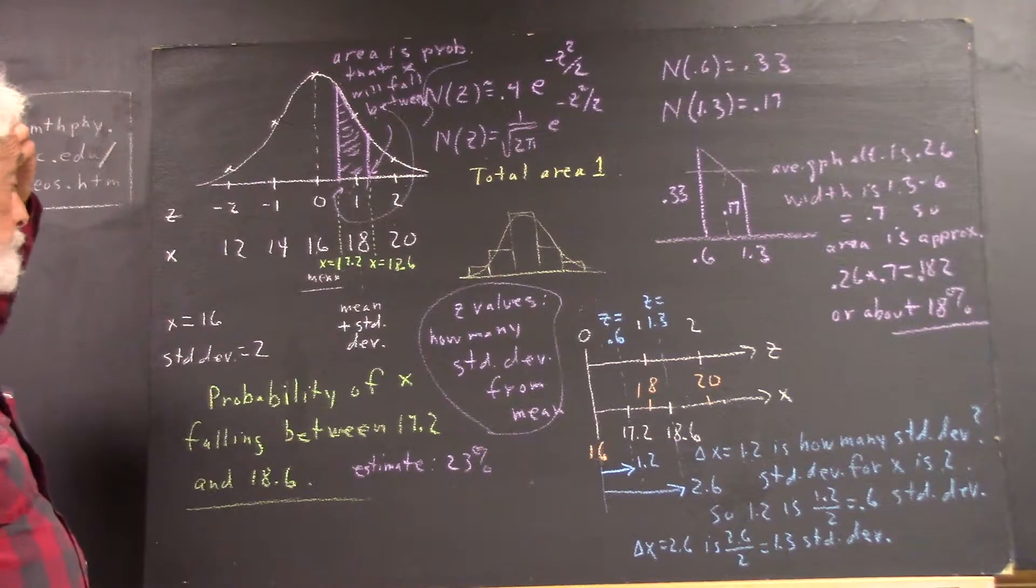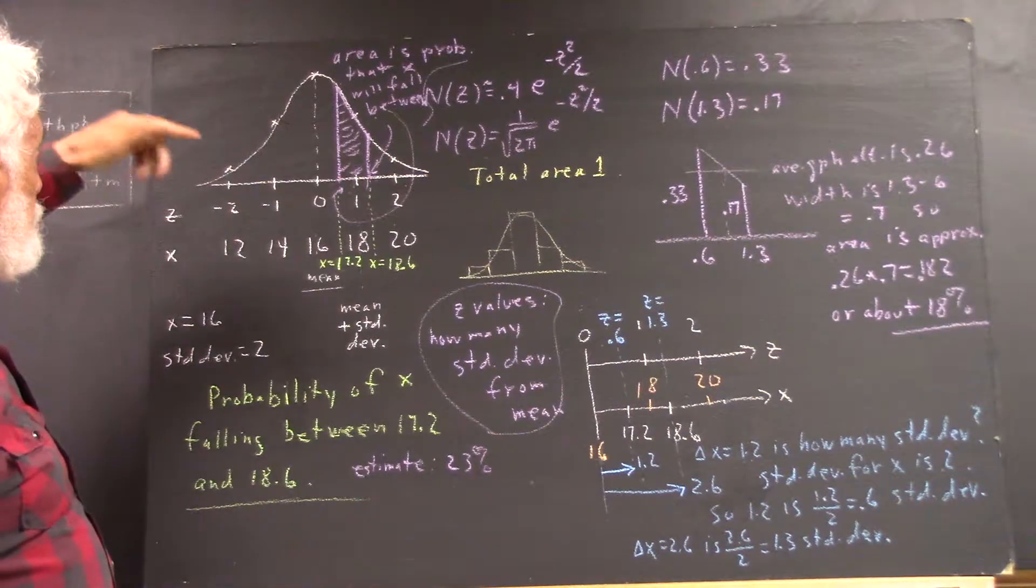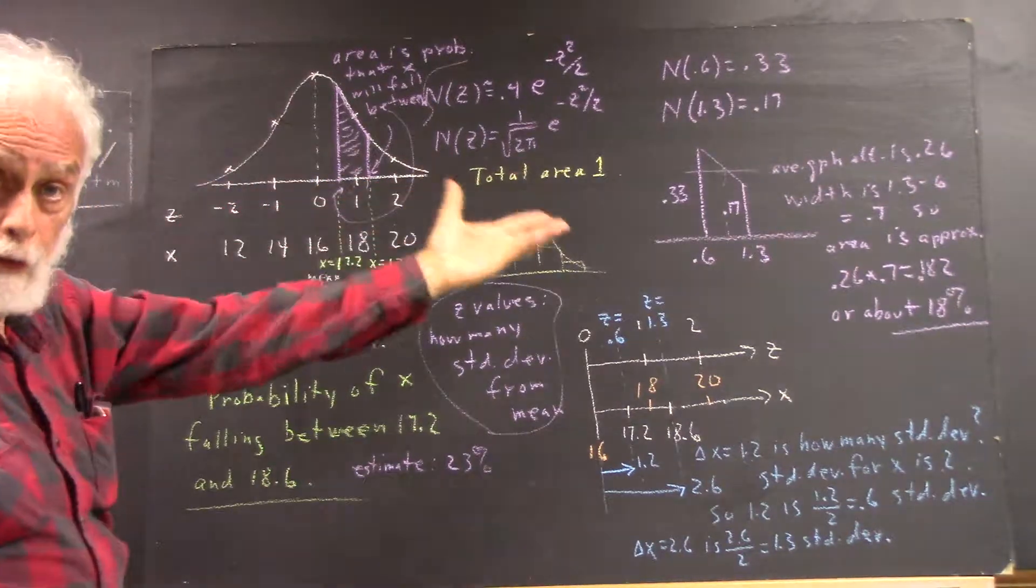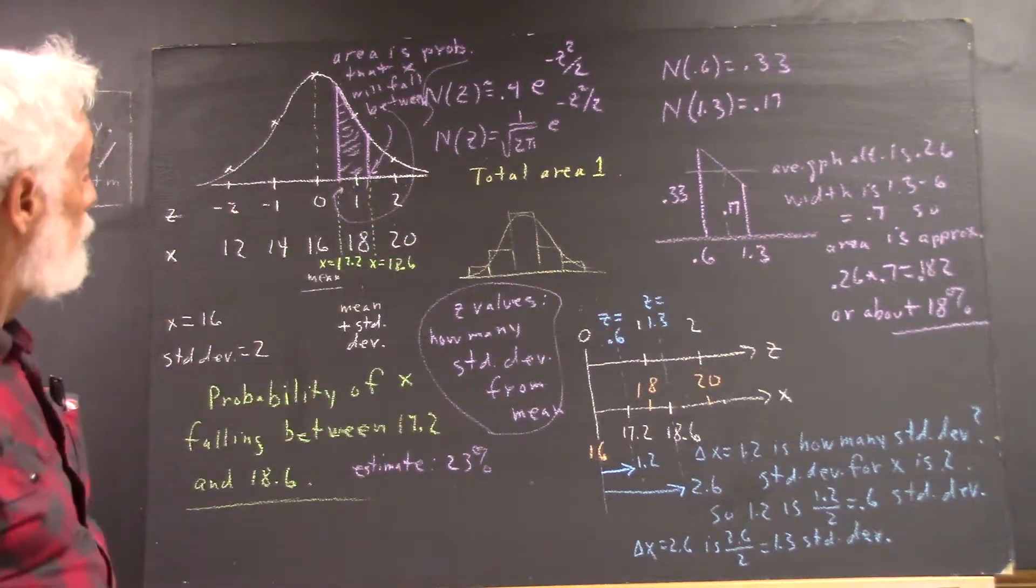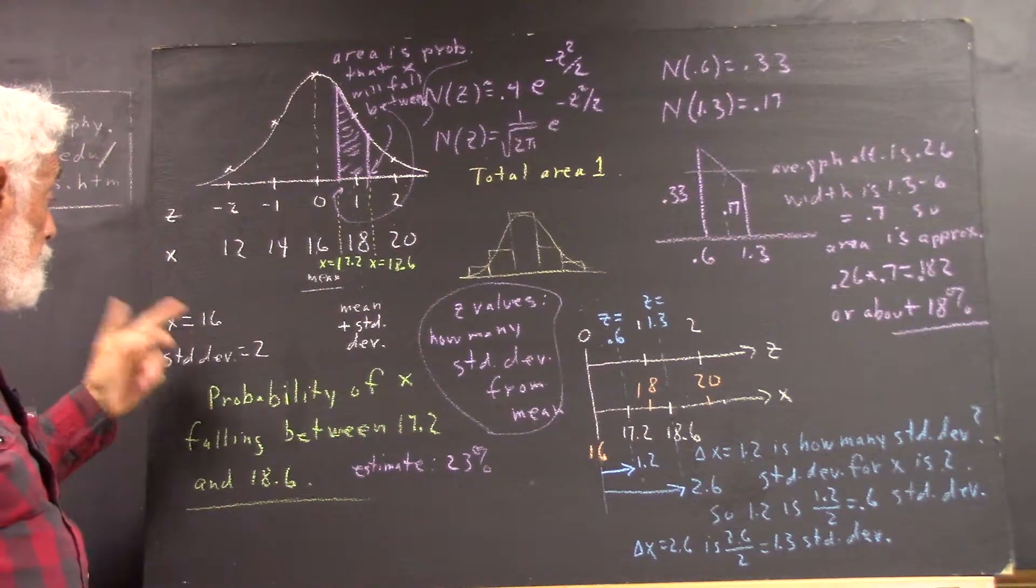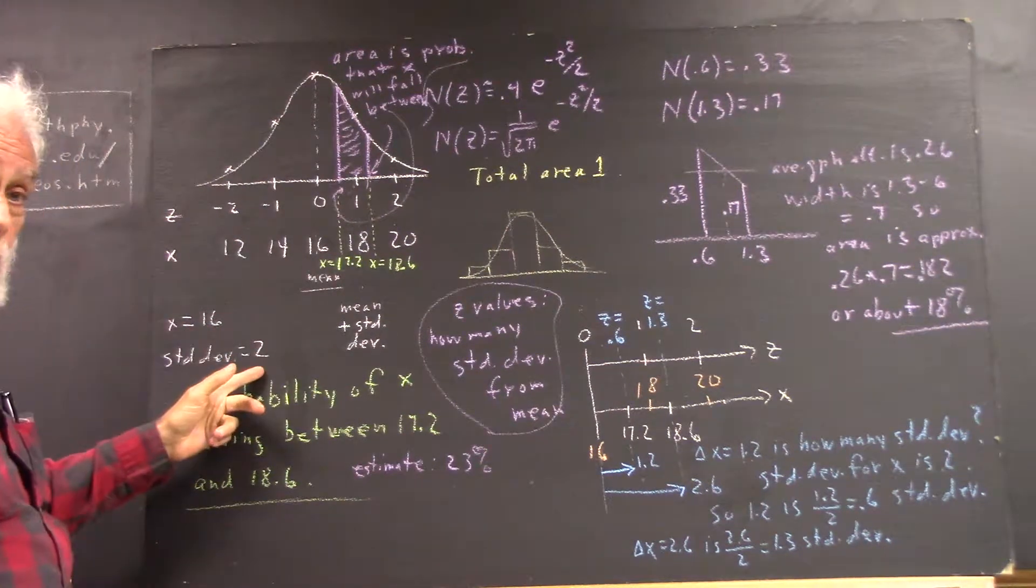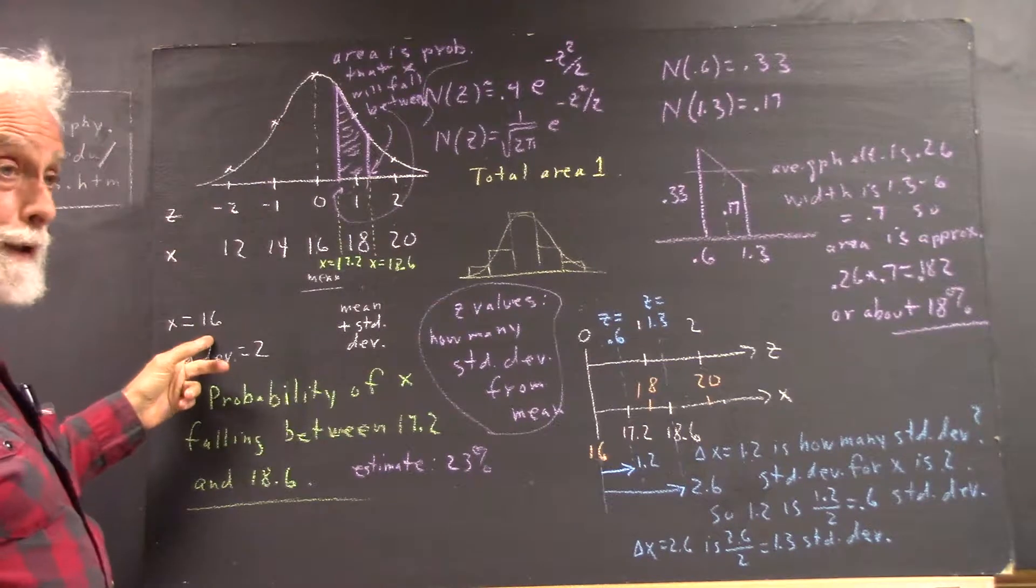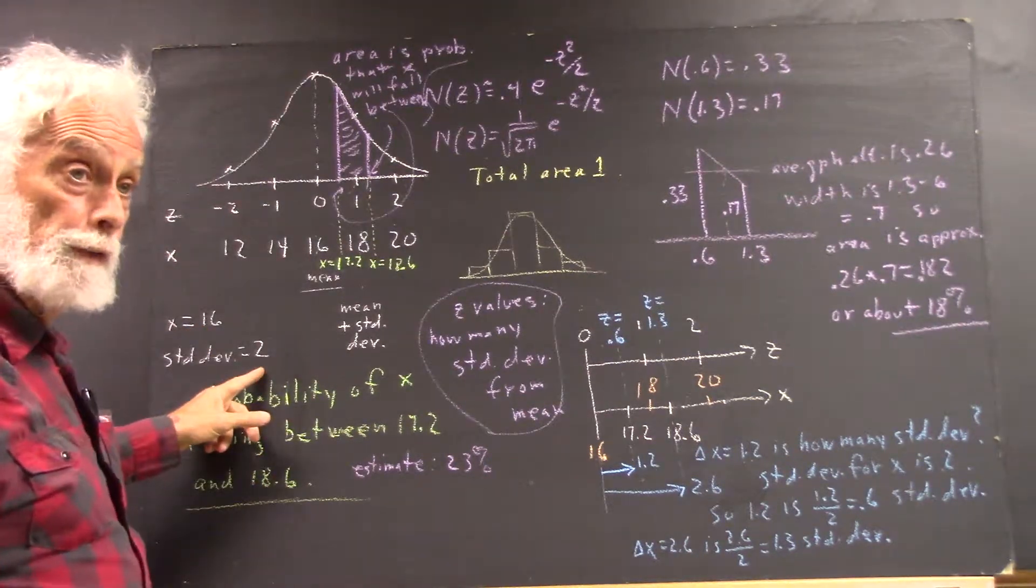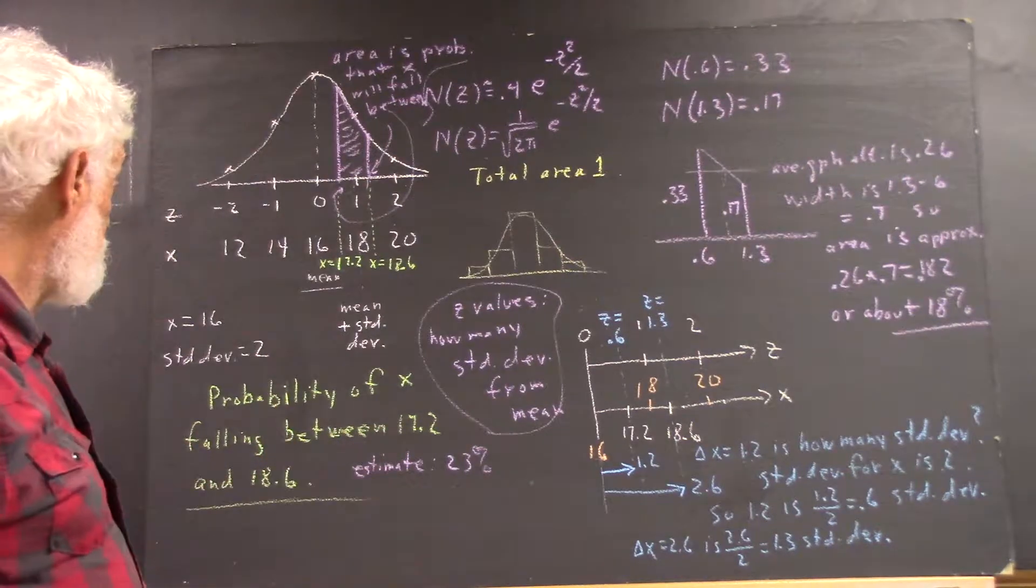If we sketch a normal curve, we label our z values in the usual manner, and then if we have some variable x that we know has a mean and a standard deviation, for example, this might be the mean of the size of my SIPs, this standard deviation of the size of my SIPs.